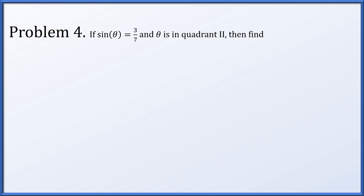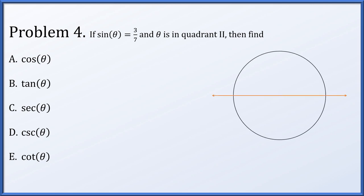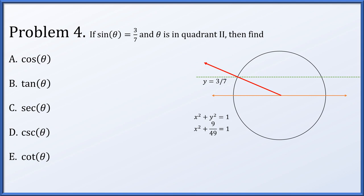In problem 4, we're told that the sine of theta is 3/7 and that it is an angle in quadrant 2, and we're going to find the cosine, tangent, secant, cosecant, and cotangent. The y-coordinate is 3/7. Using x² + y² = 1 and substituting y = 3/7, we get y² = 9/49, so x = ±2√10/7. Since we're in quadrant 2, x is negative: x = −2√10/7.